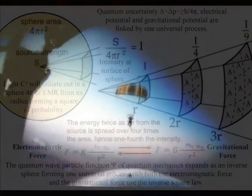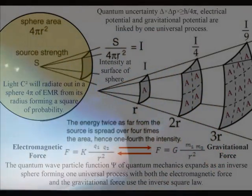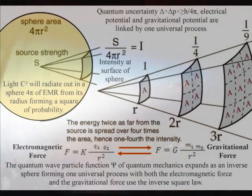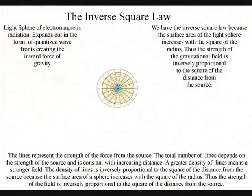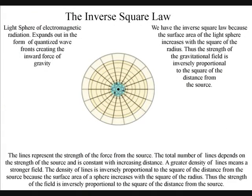I believe this can be seen in the mathematics, with both the gravitational force and the electromagnetic force having the inverse square law. Therefore, we have the inverse square law because the surface area of the light sphere increases with the square of the radius. Thus, the strength of the gravitational field is inversely proportional to the square of the distance from the source.